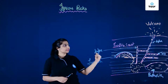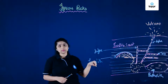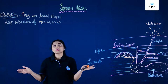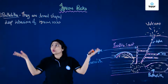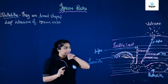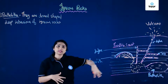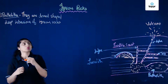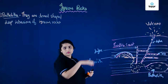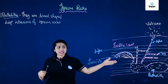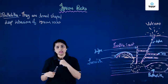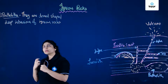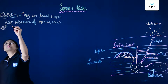Now let's write the definitions. Batholiths are dome-shaped deep intrusions of igneous rock with no base or floor — the magma hardens deep inside the earth. Sometimes when they rise to the surface, they form huge mountains whose cores are batholiths. The word 'bathos' means deep inside, which is why they are called batholiths. A very common form of batholith is granite — batholiths are mostly made up of granite.